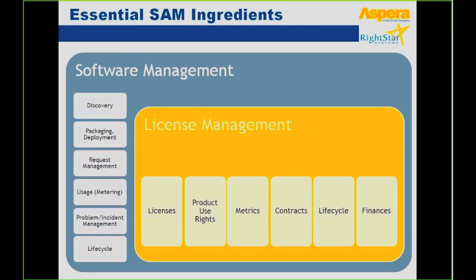Baking the cake — what would be the essential software asset management related ingredients? On the left side of the slide, you see typical ITSM processes such as deployment, request management, and problem/incident management. But the core components which relate to license management really deal with license and software inventories, the understanding and management of product use rights. Even more important: understanding what you have in your contract in terms of metrics and how they need to be calculated. On every software you use, there stands a contract governing the terms and conditions, and there is a lifecycle that needs to be managed. Of course, every piece of software has a financial dimension.